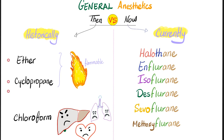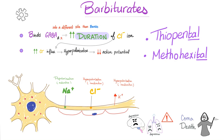Currently, we have other options such as halothane, enflurane, isoflurane, desflurane, sevoflurane, and methoxyflurane. We also have barbiturates. How do they work? They bind GABA, and since GABA is inhibitory, they cause inactivation and knock you unconscious. Barbiturates increase the duration of chloride ion channel opening — chloride is negative, so when it enters the nerve, the inside of the membrane becomes more negative.